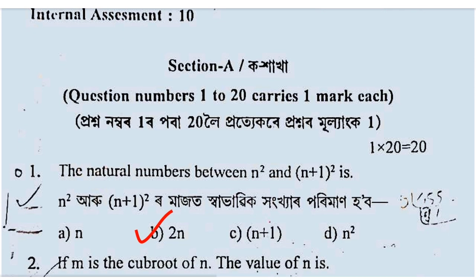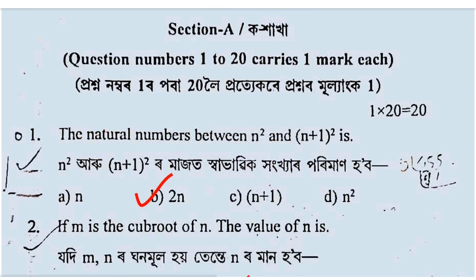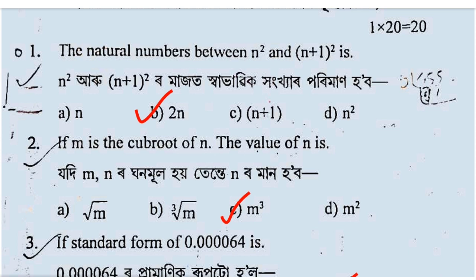The natural number between n square and n plus 1 whole square. The expression involves 2n plus 2n plus 1. The second question is: M is n square.